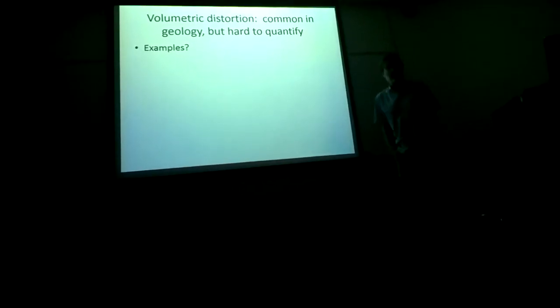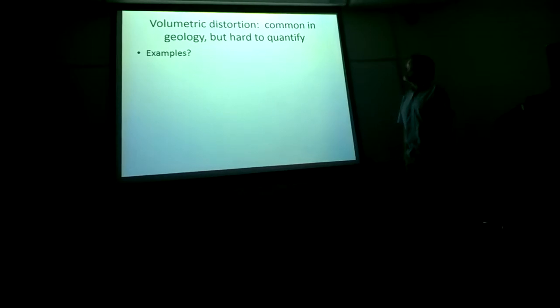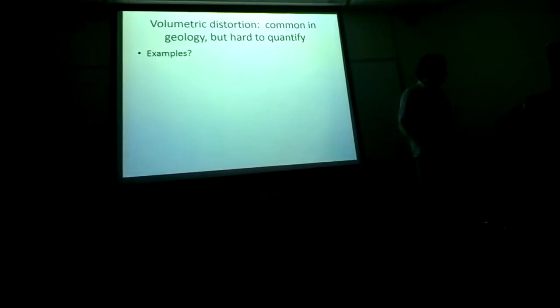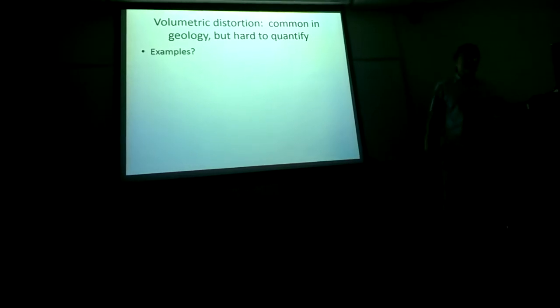The second part of distortion that could be involved, however, is a volumetric change. That could be both a decrease or an increase in volume, illustrated here schematically as a decrease in volume. Both of those are beyond the rigid body effect, and their quantification is a little trickier. Volumetric distortions are actually fairly common in geology, although they're really hard to quantify in most cases.